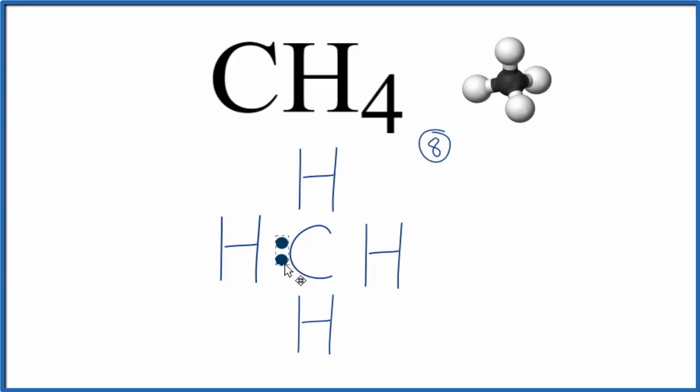We've got eight valence electrons. We'll put two between atoms. These will form the chemical bonds. We have two, four, six, and then eight. We've used all our valence electrons.